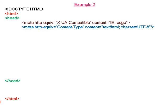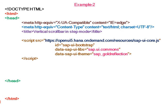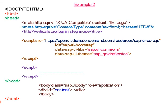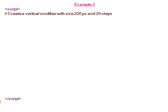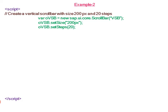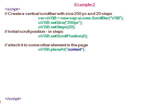In example 2, we create a vertical scroll bar in step mode. We start by creating a vertical scroll bar with size 200 pixels and 20 steps. The initial scroll position is set to 0. Since the scroll bar is vertical by default, we do not need to set the vertical property explicitly.